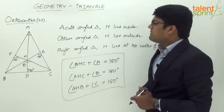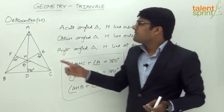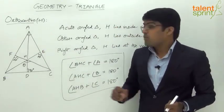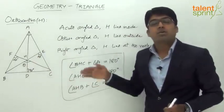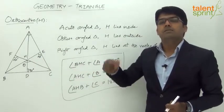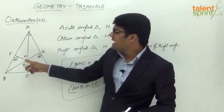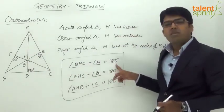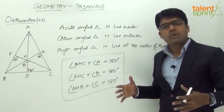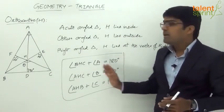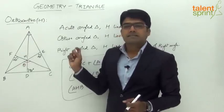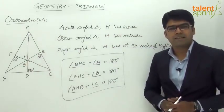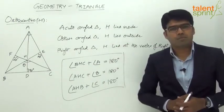For example, if in triangle ABC angle A equals 60 degrees, then angle BHC equals 120 degrees, because 60 plus 120 equals 180 degrees. So without solving, if you simply remember this property, you can immediately find that if angle A is 60 degrees, then angle BHC will be 120 degrees. That concludes the orthocenter and its properties.